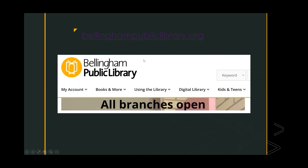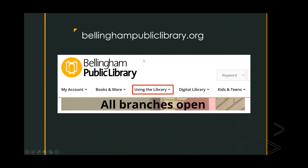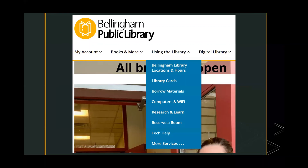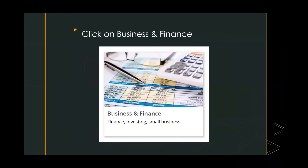Just to recap: you go to our website, bellinghampubliclibrary.org, click on 'Using the Library,' which drops down a menu, then click on 'Research and Learn.' From there, click on 'Business and Finance' once you get into those Research and Learn pages.